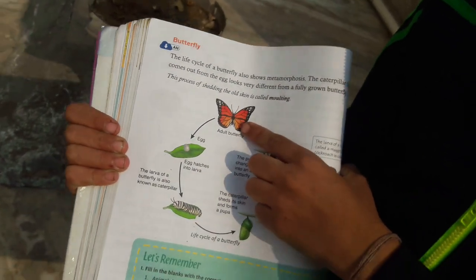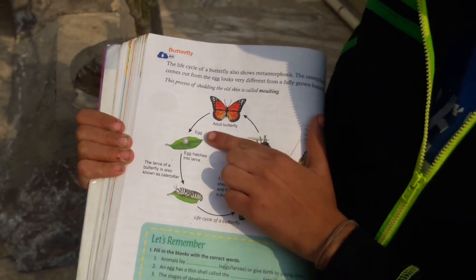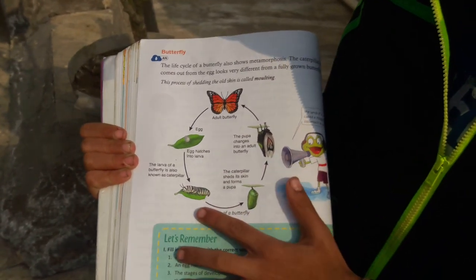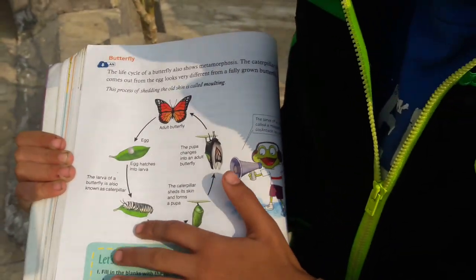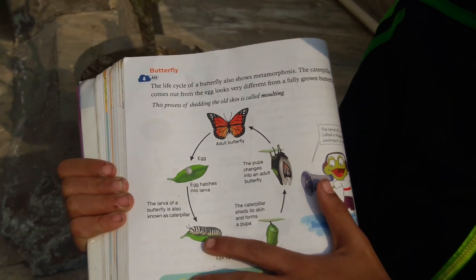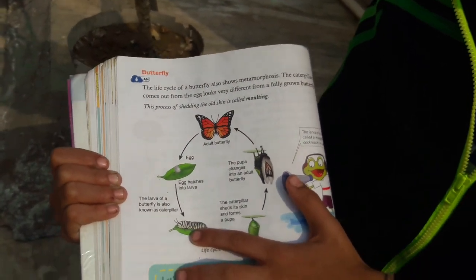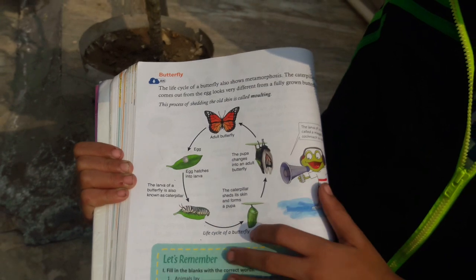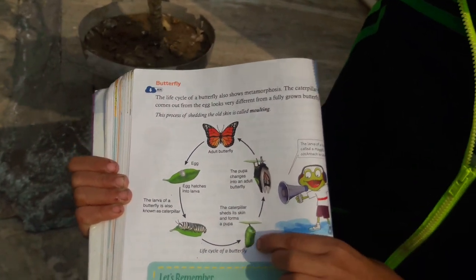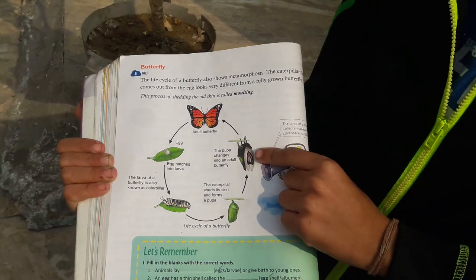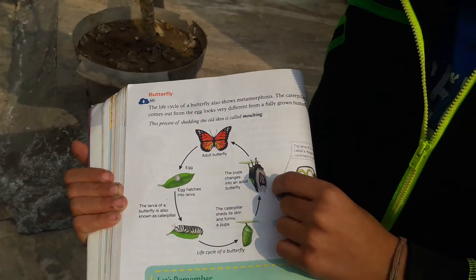This butterfly first gives this egg. The egg hatches into the larva. The larva for a butterfly is also known as a caterpillar. This larva turns into a pupa and this butterfly is coming out of this pupa.